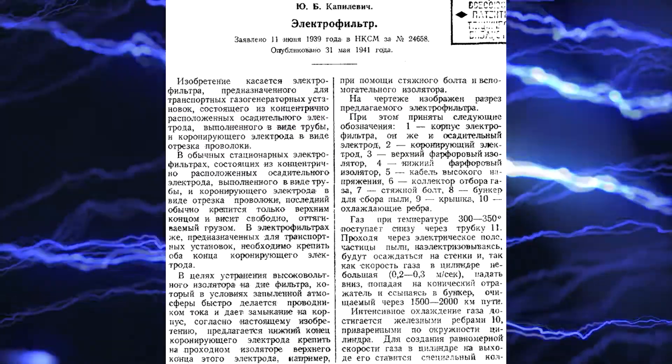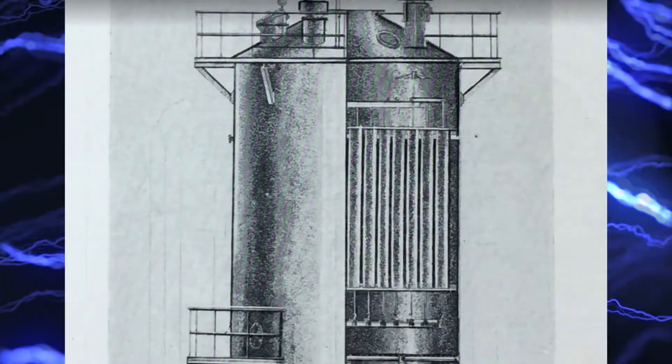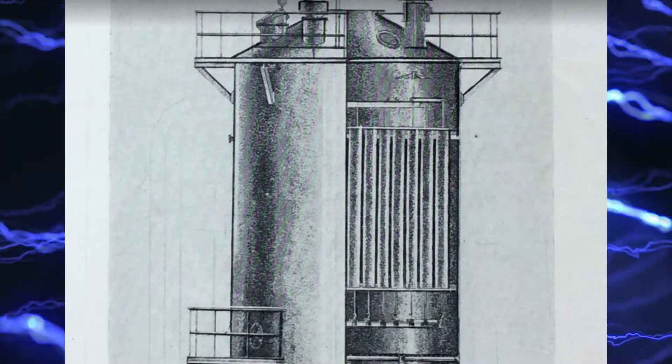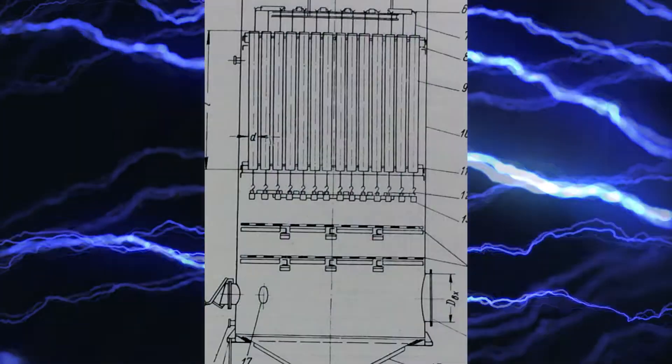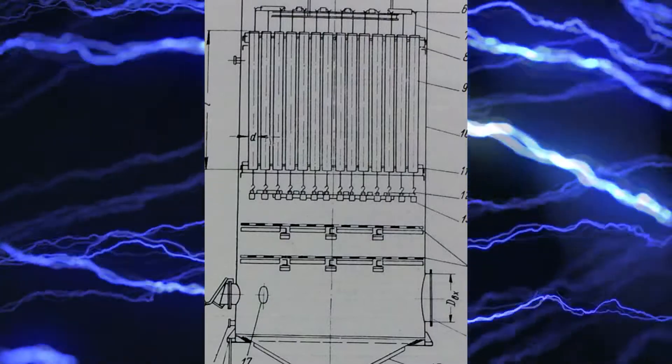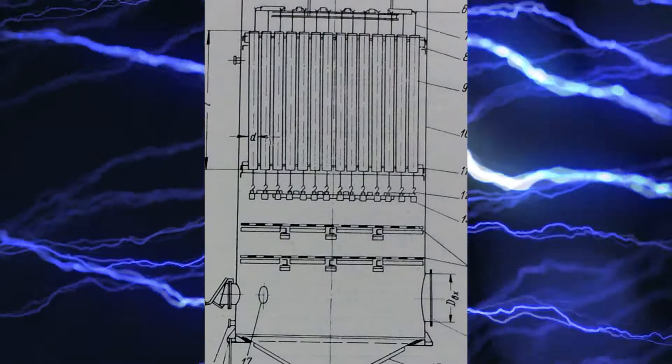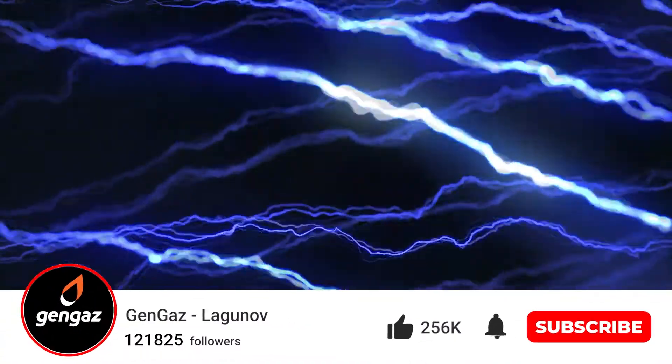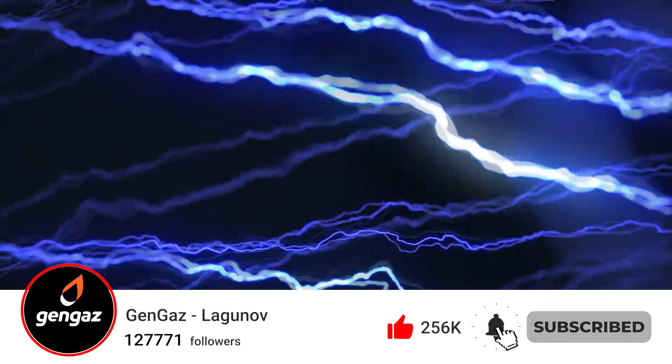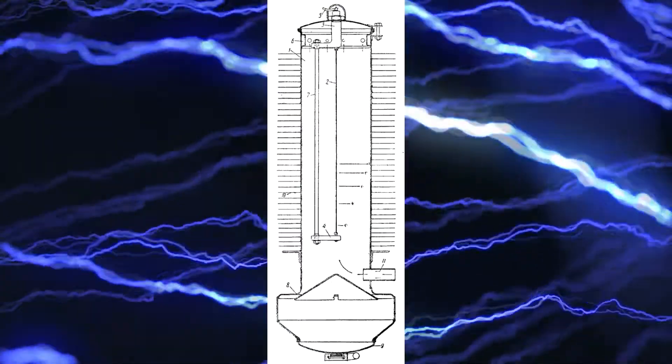Conventional industrial electrostatic filters include a thin corona electrode string strained in the middle of the precipitation tube, pulled down by a weight. It is impossible to do this in a car because it shakes all the time. The electrode must not move away from the center, otherwise the filter will not work.